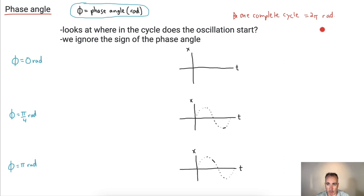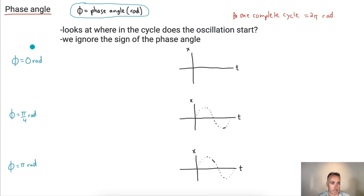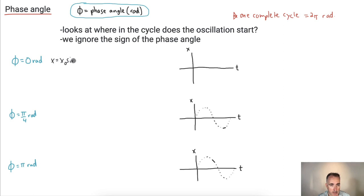That means if you go all the way around — one whole cycle like this — at the end, the value will be two pi in terms of radians. So we're going to ignore the time and look at it in radians, in terms of two pi. Let's look at the first example where phi equals zero radians. That means the equation would be x equals x₀ times sine of (omega·t plus zero) — in other words, just x equals x₀ sine(omega·t).